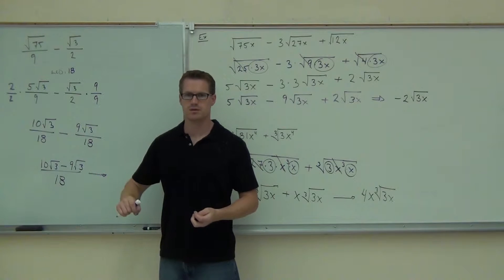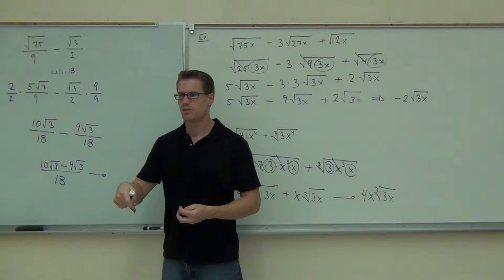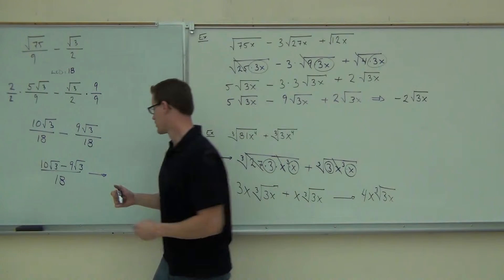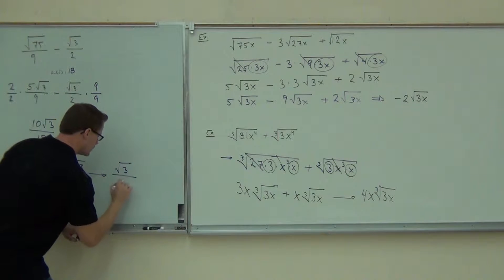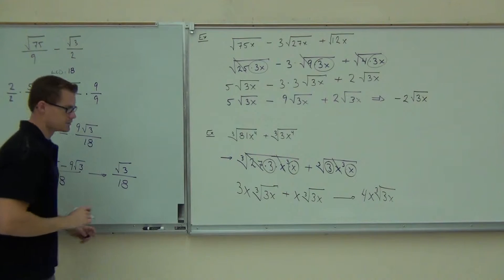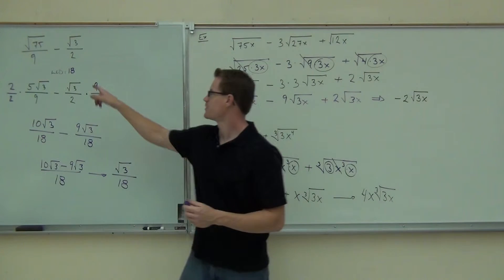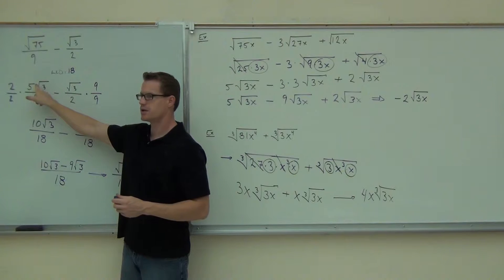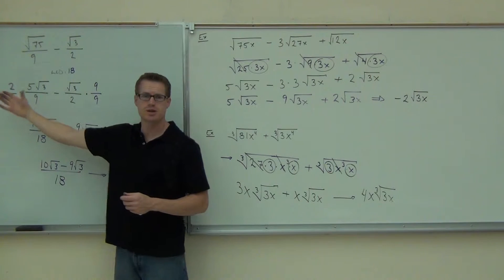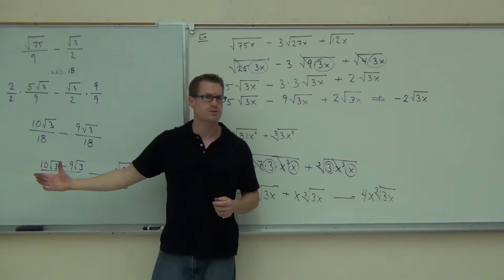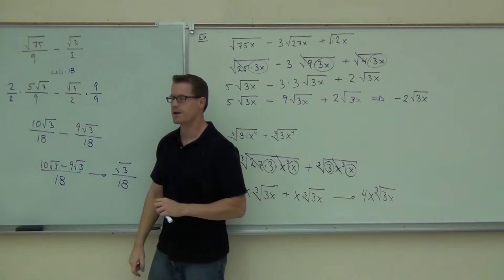So we're going to get root 3 over 18. We don't have to put the 1 — it's like saying 1x. Notice how simplifying your radical really helped you — you already had a common radical. That way you just multiply your numbers, your coefficients, and that really helps. Otherwise you're going to have to simplify at some point.